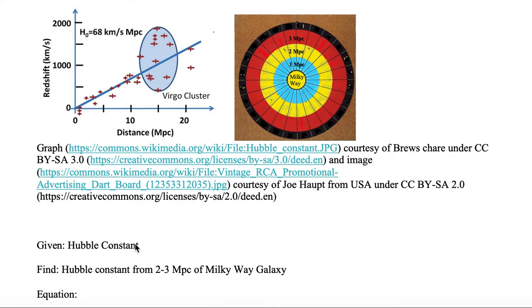We're given the Hubble's constant, and we want to find the Hubble's constant from 2 to 3 megaparsecs of the Milky Way galaxy. If we go look at our dartboard, between 0 and 1 it's this blue color, between 1 and 2 it's this yellow color, and between 2 and 3 it is this red color. We want to know what is the speed of the galaxies between 2 and 3 megaparsecs, how fast are they moving away from us, which is called the Hubble flow.